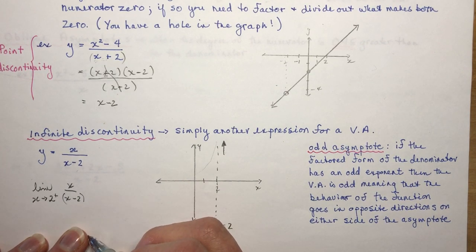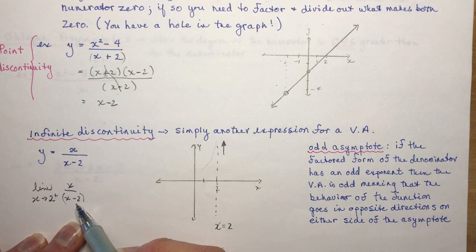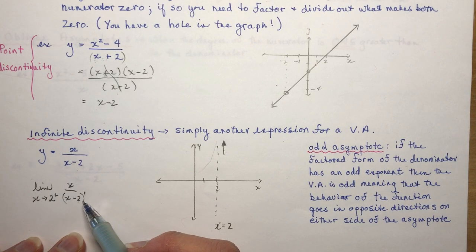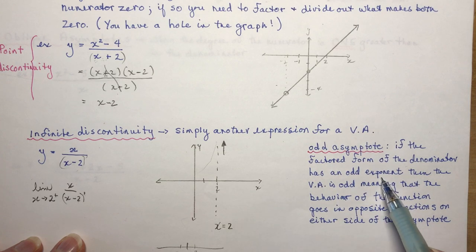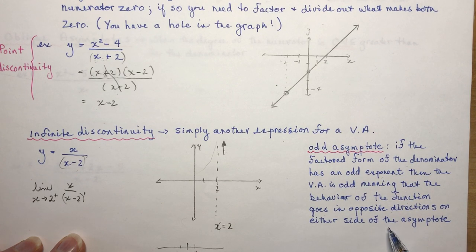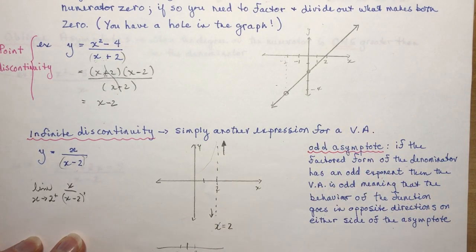This is what you call an odd asymptote. In the factored form of the denominator, the exponent is 1 — an odd number — making this an odd asymptote. An odd asymptote means the function goes in opposite directions on either side. So if it's going up on the right, it has to be going down on the left.